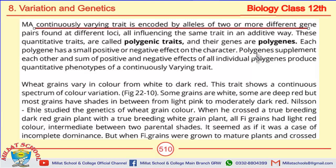In pleiotropy, one gene controls multiple phenotypes. But in polygenic inheritance, the opposite is true: one trait is controlled by multiple genes present at different loci, influencing that trait in an additive way. We call these polygenic traits. Each polygene has a small positive or negative effect on the character.